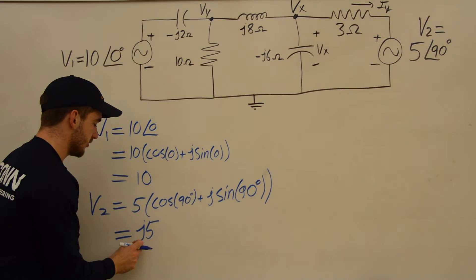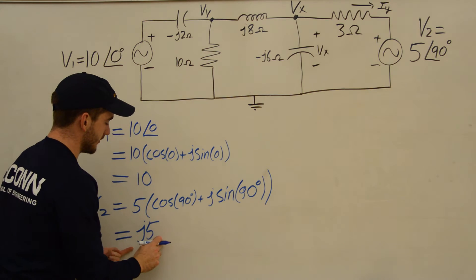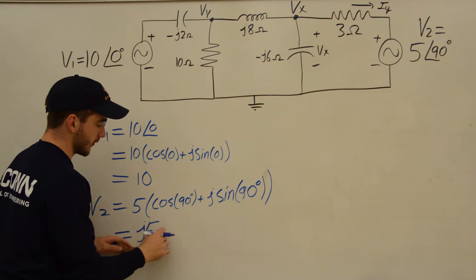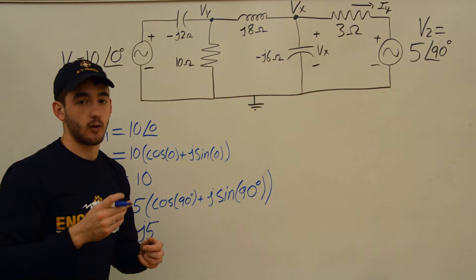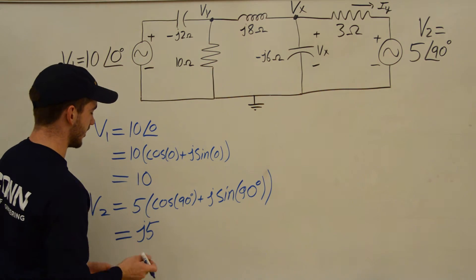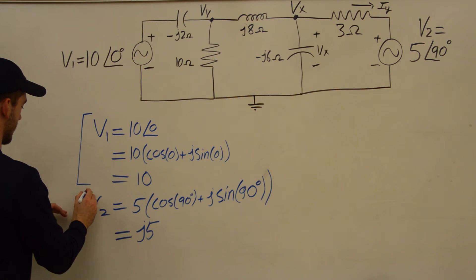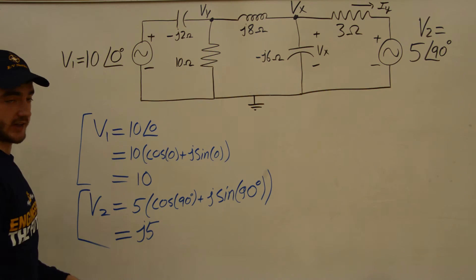Just a quick note, keep your Js as the first term. You don't want to have 5J, because if you have a lot of terms in front of the J, you might not be able to tell right away if it's real or imaginary. So keep the J in front. So now we have V1 equals 10, and V2 equals J5.